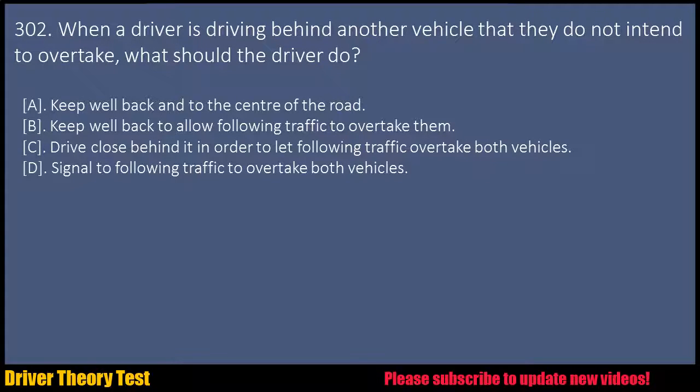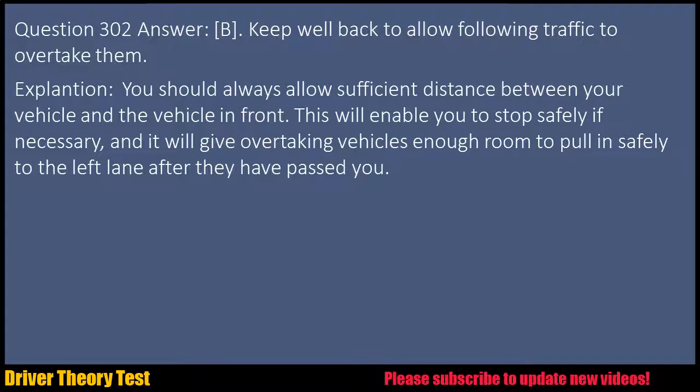Question 302: When a driver is driving behind another vehicle that they do not intend to overtake, what should the driver do? a. Keep well back and to the center of the road. b. Keep well back to allow following traffic to overtake them. c. Drive close behind it in order to let following traffic overtake both vehicles. d. Signal to following traffic to overtake both vehicles. Question 302 Answer: B. Keep well back to allow following traffic to overtake them.